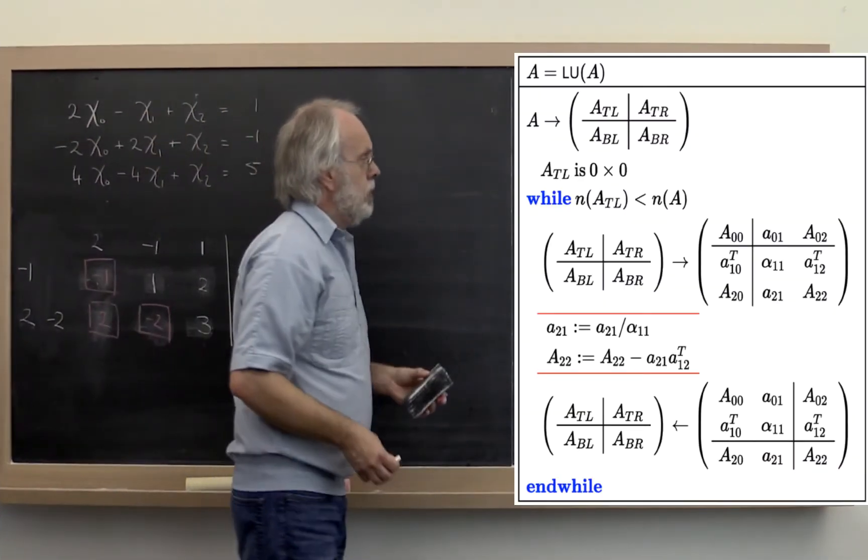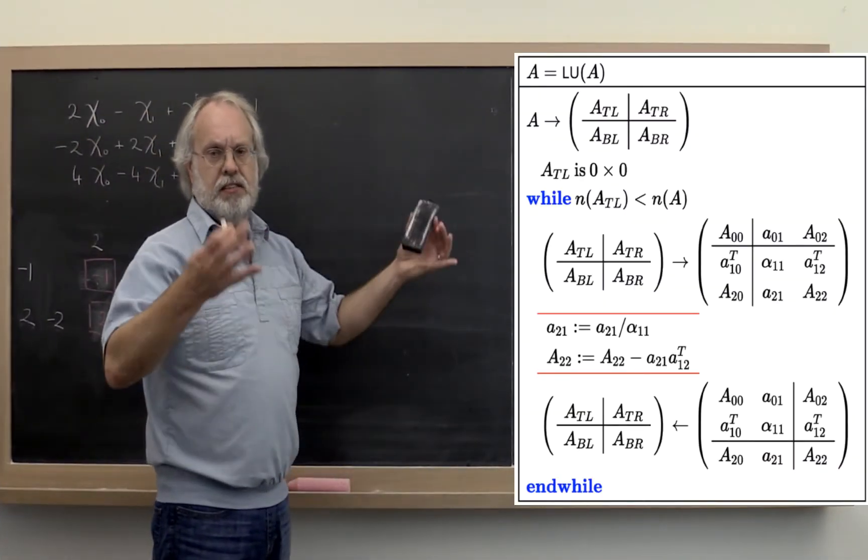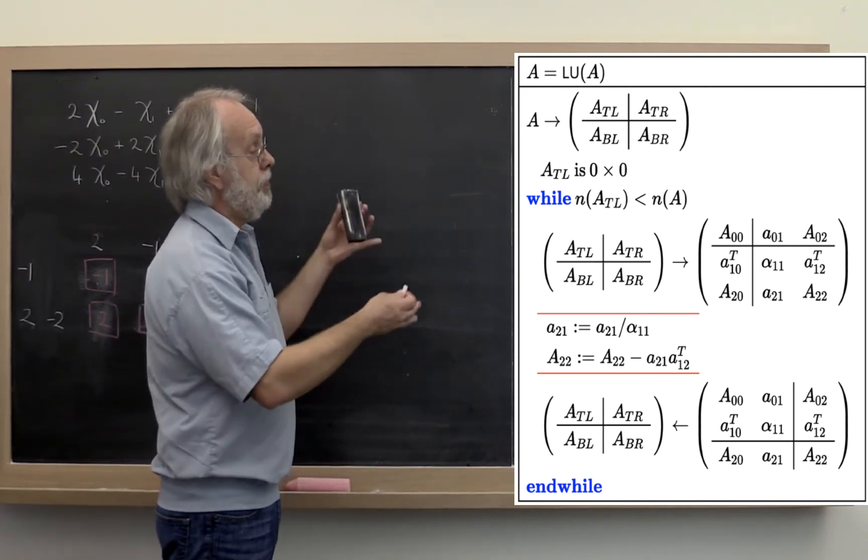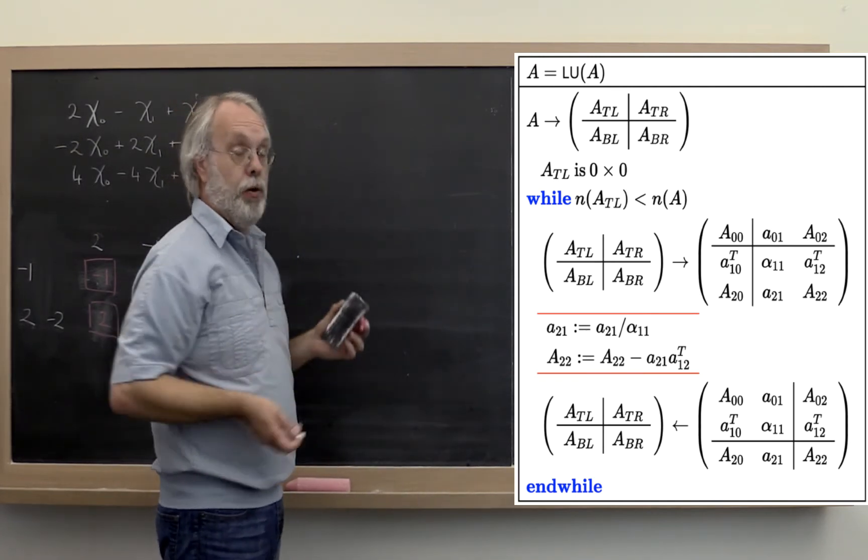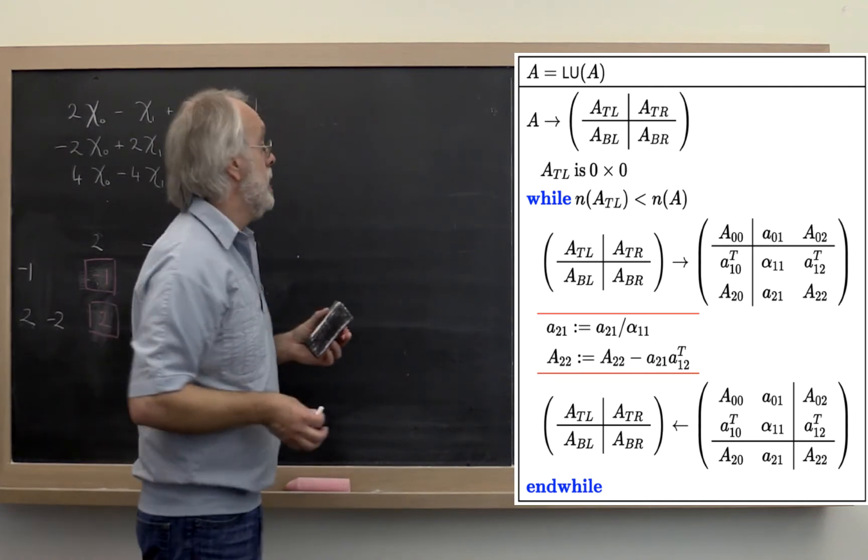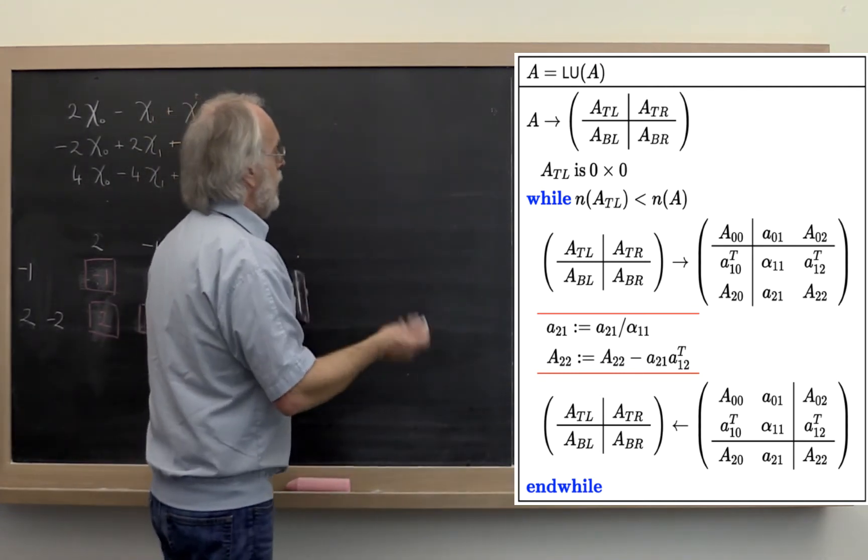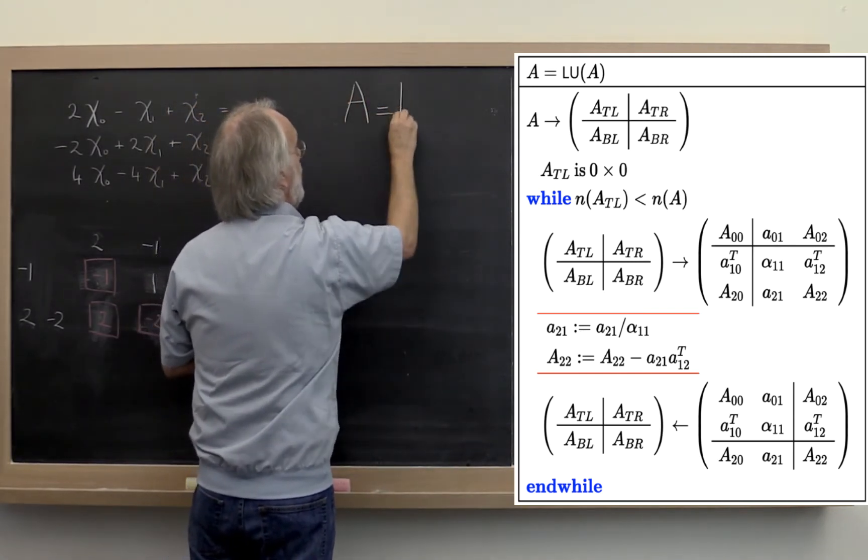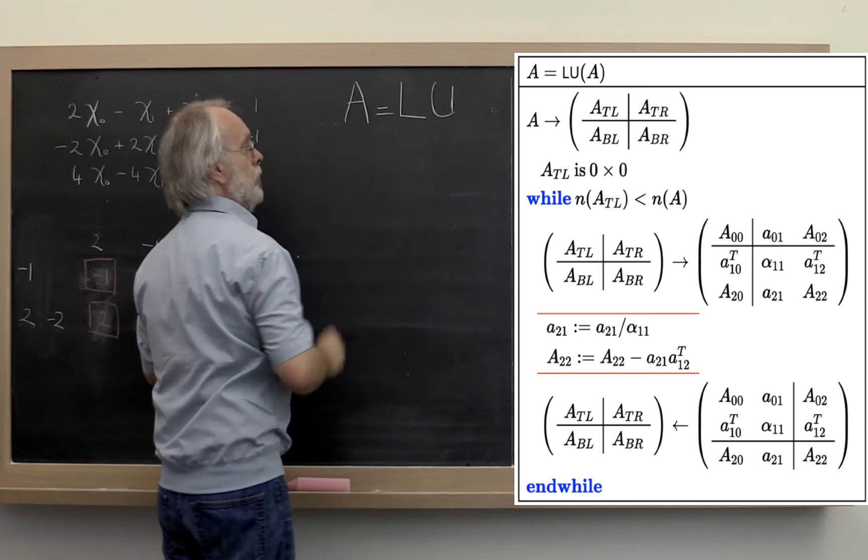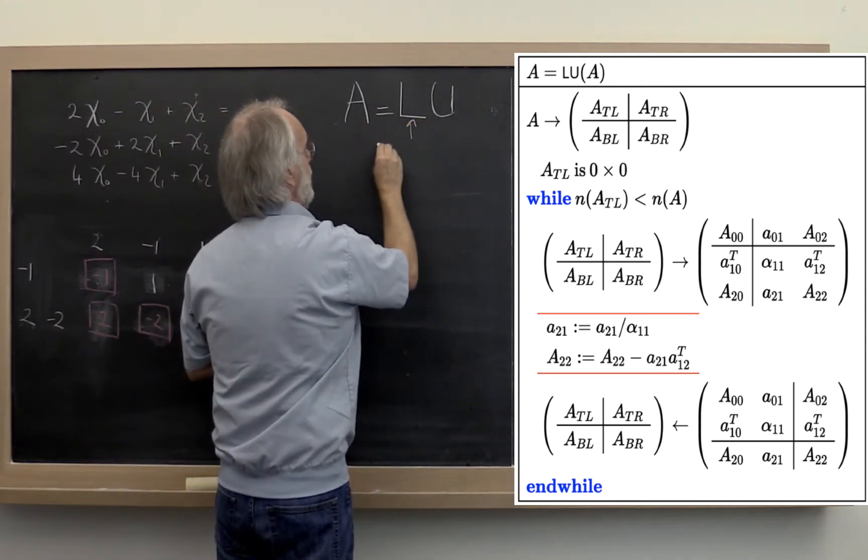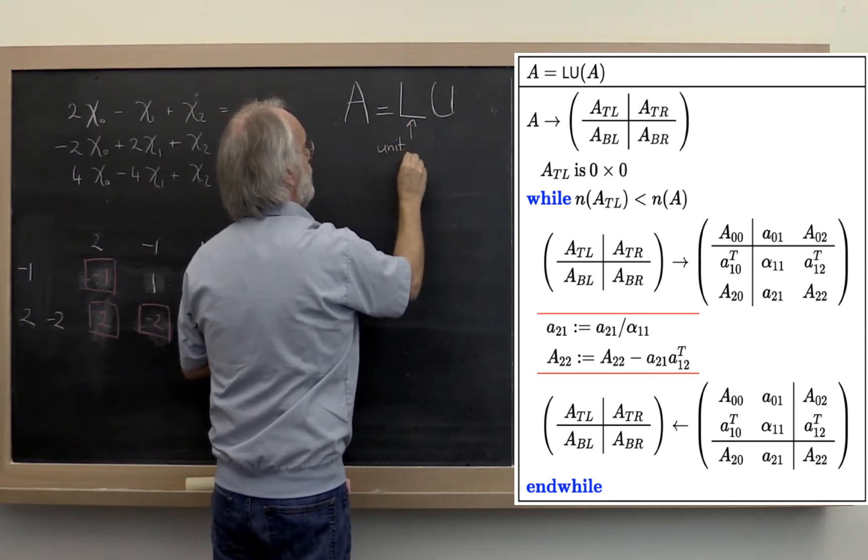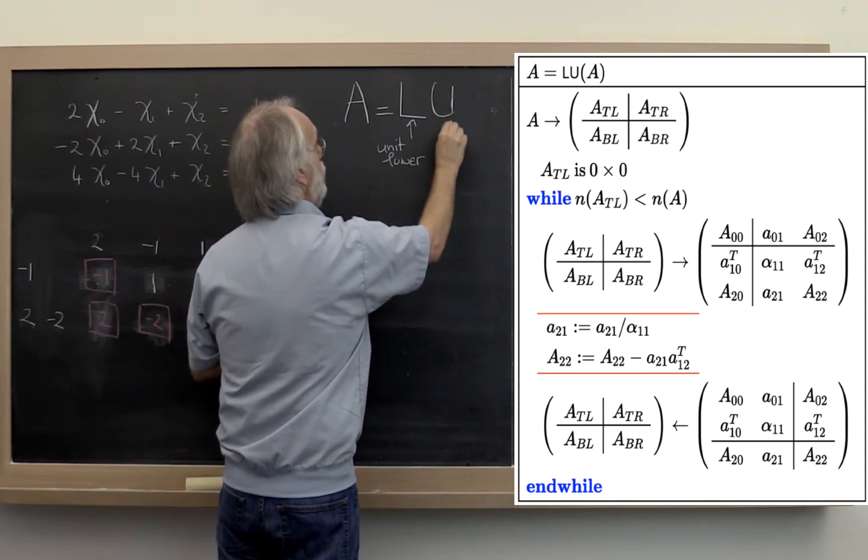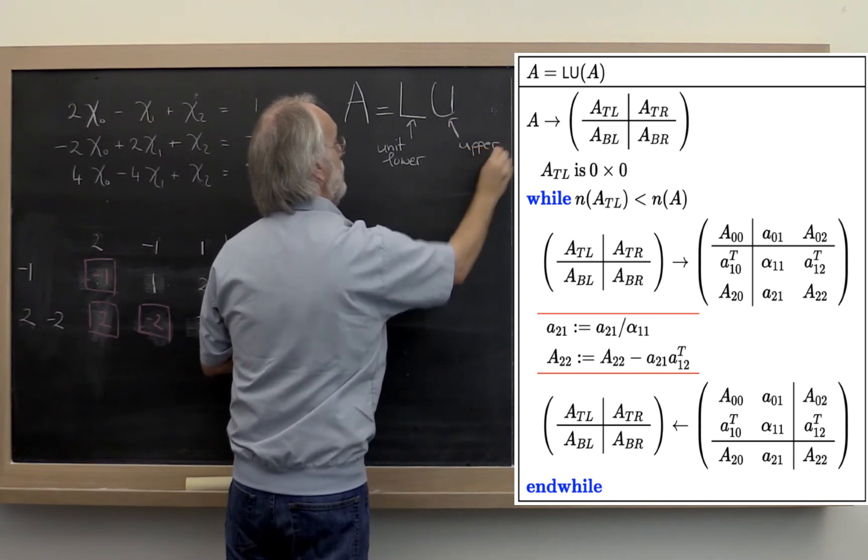On the right here we have an algorithm typeset in this funny notation that we use called the FLAME notation. By now you've seen a few algorithms like this and you know how to interpret it. What does it compute? It computes L and U such that A equals L times U. This is known as the LU factorization, where L is a unit lower triangular matrix and U is an upper triangular matrix.